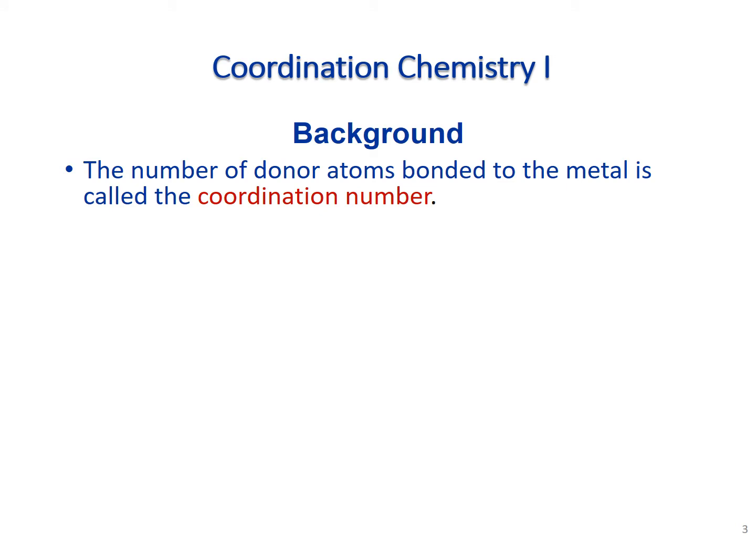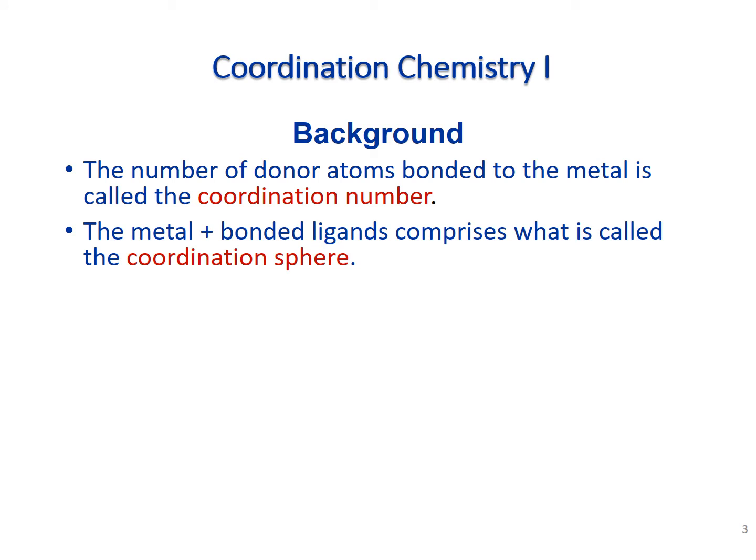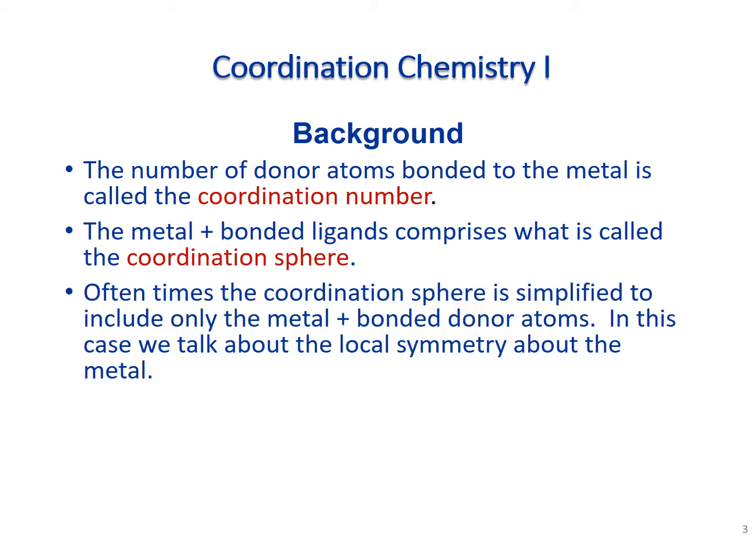The number of donor atoms bonded to a particular metal center is called the coordination number. The metal plus the bonded ligands make up the coordination sphere, sometimes called the inner coordination sphere. Often the coordination sphere is simplified to only the metal plus the bonded donor atoms — this is the local symmetry. Sometimes ligands are quite large, so you just draw in the bonded donor atom. Some of these symmetries will be things you've heard before, like octahedral geometries.